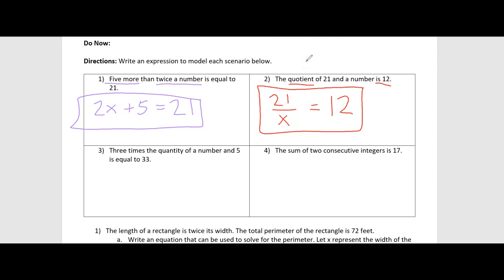Number three says three times the quantity of a number and five is equal to 33. We know we're multiplying by three because it says three times. Then it says the quantity — whenever we see the quantity, that's generally something in parentheses. So the quantity of a number and five implies addition, giving us x plus 5. So the expression is 3(x + 5) is equal to 33.